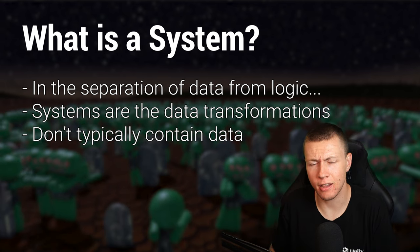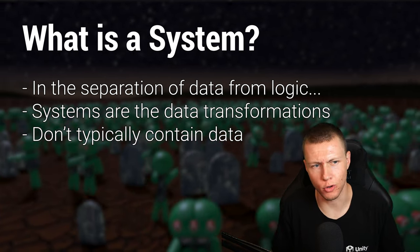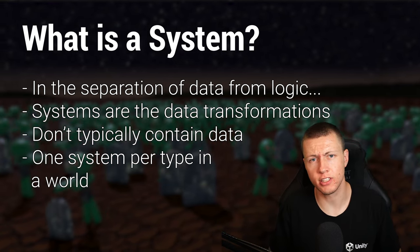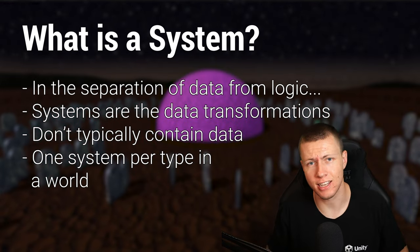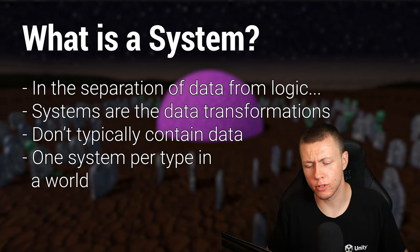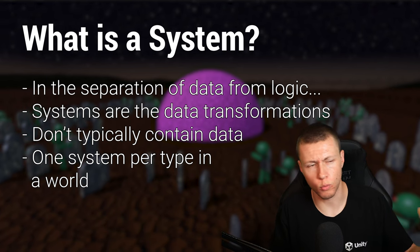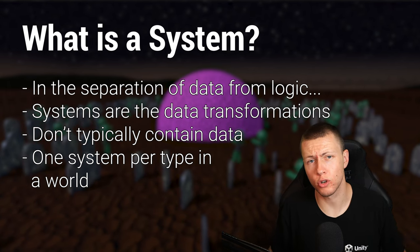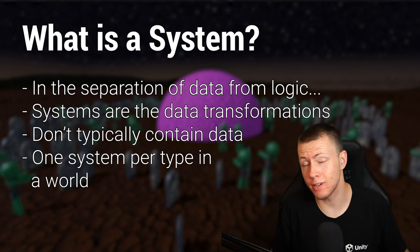Systems don't typically contain data, though they may have some helper variables. All systems in Unity ECS belong to what's known as a world. A world contains systems and entities, and most often we just have one world. However, in cases like multiplayer, we can have multiple worlds — one for the server and one for each client. Each world only has one system of a particular type, so it's basically a singleton.